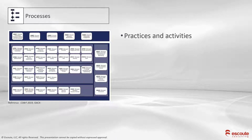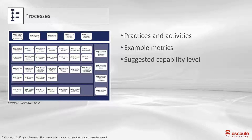Each governance and management objective includes several process practices, and each practice has one or more activities. There are a limited number of example metrics that accompany each of those practices to measure achievement of the practice and its contribution to the overall objective. A capability level is assigned to all process activities, and a process reaches a certain capability level as soon as all activities of that level are performed successfully. COBIT supports a CMMI-based process capability scheme which ranges from zero to five.